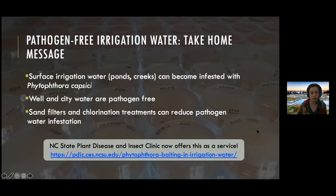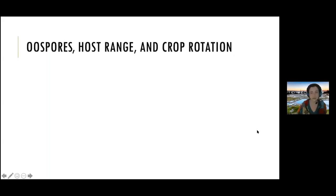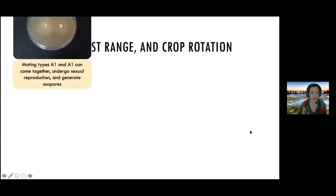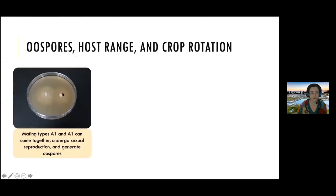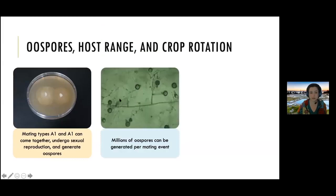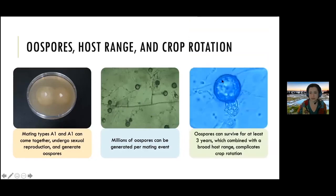Now let's talk about oospores. The pathogen has two mating types, A1 and A2. When they're touching in culture media, they form oospores — millions of them, with a really thick cell wall. These things can stay in the soil for years; they will survive nuclear warfare. There has been anecdotal evidence of oospores surviving for more than 10 years.